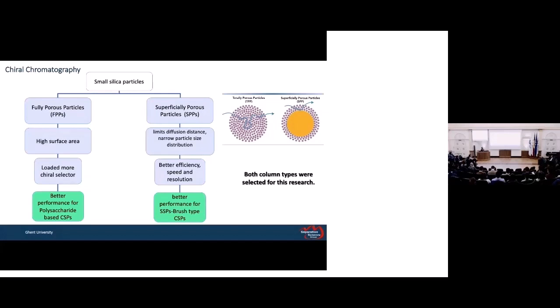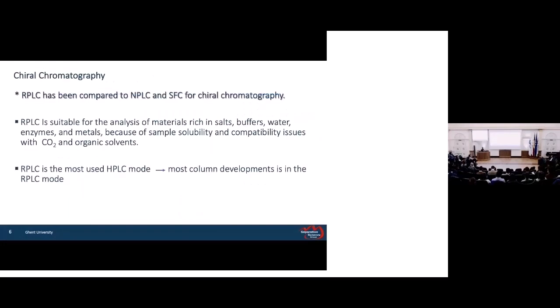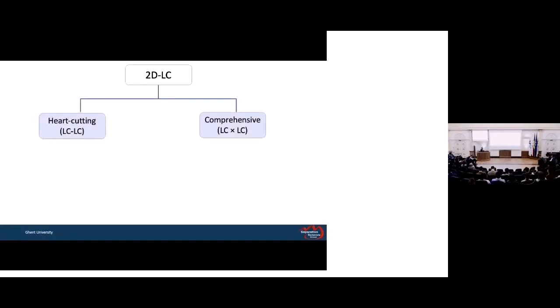In this study, both types of column were selected to be investigated. Regarding types of chromatography in chiral chromatography: because most analytes are in water or buffer in enzyme or matrices with lots of salt, these materials are not compatible with carbon dioxide or organic solvents. So RPLC is preferred over SFC or normal-phase chromatography. RPLC is also the most widely used HPLC mode, and most column development — including these fast CSPs — is done in RPLC mode. Still, one-dimensional systems are not sufficient to analyze complicated samples, so we have to move to a two-dimensional system.